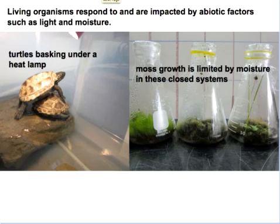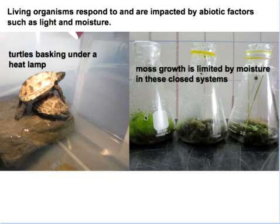There are a whole list of terms: the community, the ecosystem, the population, the niche, the habitat, and the species. Two turtles are basking beneath a heat lamp, obtaining the necessary heat to keep their bodies warm — a non-living component which is temperature. Over in the other picture, we see moss in controlled containers each with different amounts of moisture, with the most moisture giving the best growth.